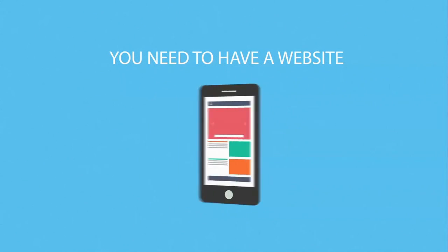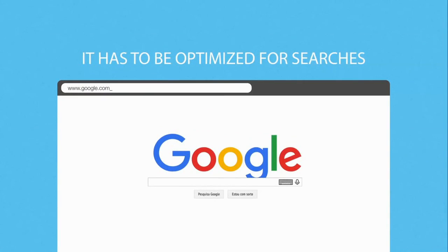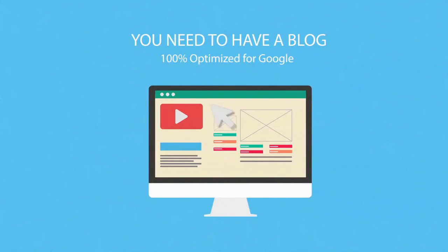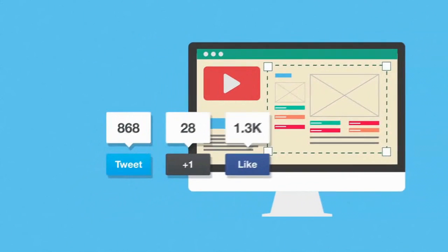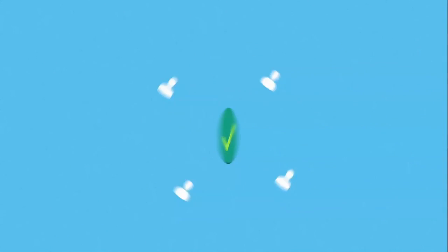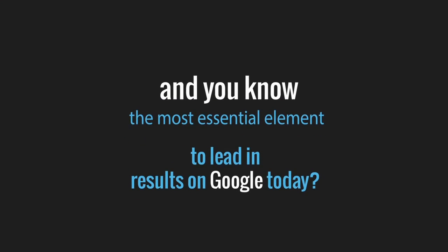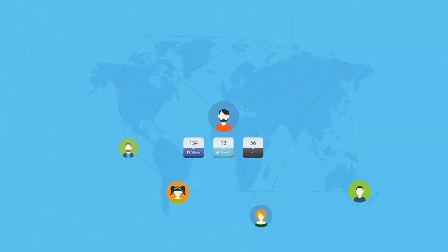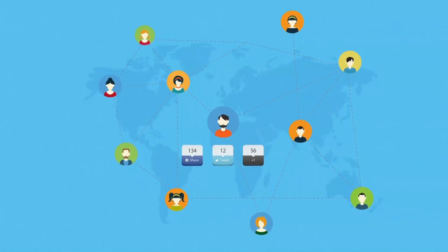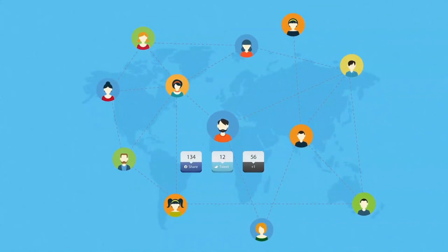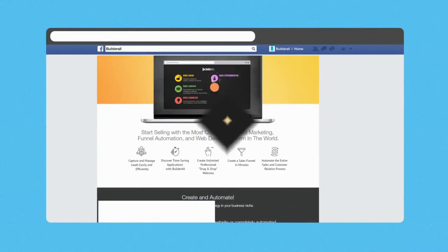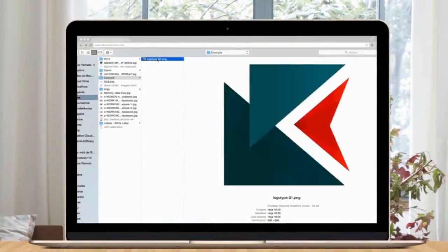You need to have a website with eye-catching visuals. It must be compatible with all kinds of devices, optimized for searches, and must have quick and easy editing tools. To gain authority and establish relationships with your users and potential clients, you will also need to have a blog. And the most essential element to gaining leading results on Google today? Social proof! You need hundreds of people commenting, sharing, and enjoying your content. You also need a fan page that will call attention and get your visitors involved, all while capturing leads for potential clients.